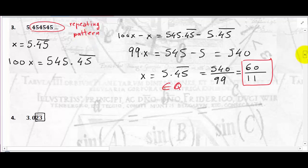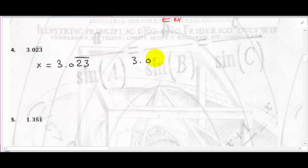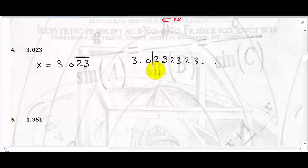Let me do example 4, and you'll do example 5 on your own. The number here is 3.0232323... I won't be able to use x directly because if I multiply x by 10, 100, or 1,000, I get different digits before the repeating block starts — the leading 0 prevents me from matching the digits after the decimal point if I use x itself.